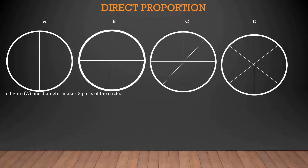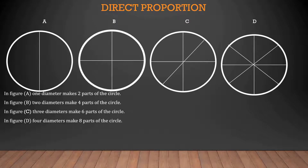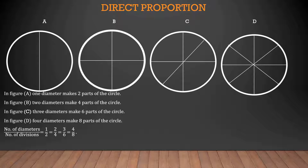In figure A, one diameter makes 2 parts of the circle. In figure B, two diameters make 4 parts of the circle. In figure C, three diameters make 6 parts of the circle. In figure D, four diameters make 8 parts of the circle. So the number of diameters upon number of divisions is equal to 1/2 = 2/4 = 3/6 = 4/8.